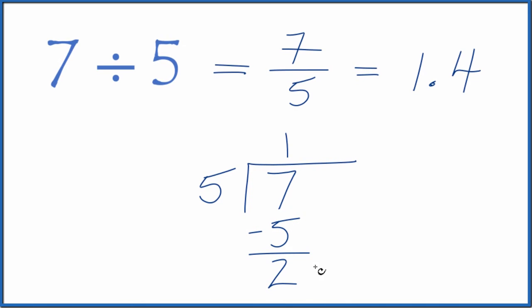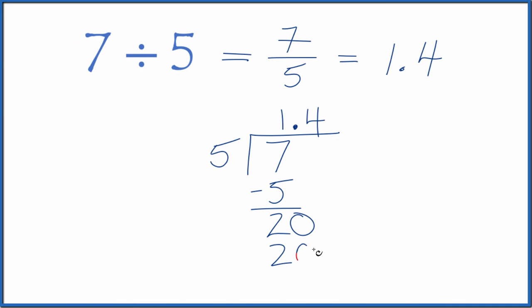5 doesn't go into 2, but we can call this 20 if we put a decimal point up here. So now 4 times 5, that's 20. Subtract, no remainder.